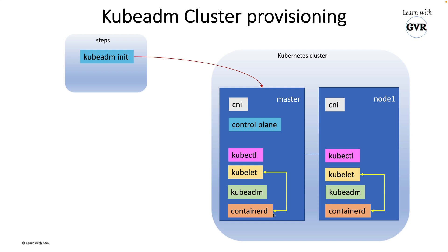Then what happens is kubelet will try to communicate and negotiate with containerd, because ultimately a pod means internally a container, and container means the container runtime will create it. The container runtime will be instructed and listened to by the control plane. When you do kubeADM join, the worker node will join the cluster — that's how kubeADM cluster provisioning works at a high level.